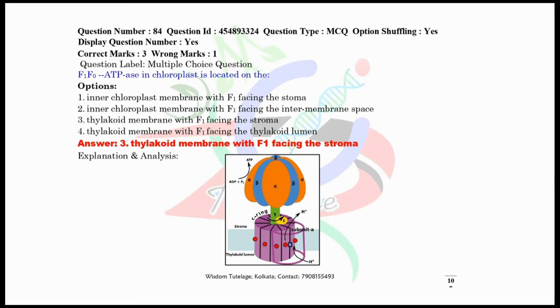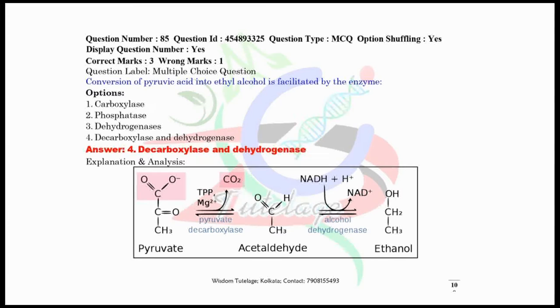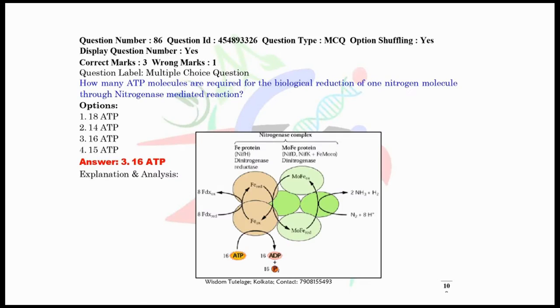Question number 84, F1-F0 ATPase in chloroplast is located on the thylakoid membrane with F1 facing the stroma. I have given here the diagrammatic view of the ATPase enzyme. Go through it and remember the different subunits of these structures. Now question number 85, conversion of pyruvic acid into ethyl alcohol is facilitated by the combination of two enzymes: decarboxylase and dehydrogenase. I have given here the entire chemical conversion from pyruvate to acetaldehyde and acetaldehyde to ethanol.